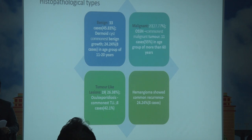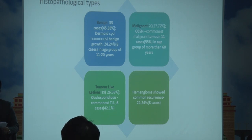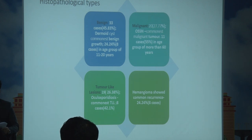In the histopathological types, benign tumors constituted 45.83%, and dermoid cyst was the commonest growth in the age group of 11 to 20 years. In the malignant tumors, there were 20 cases; the commonest was OSSN with 11 cases in the age group of more than 60. Tumor-like lesions numbered 19, and oculosporidiosis is very common in our area.